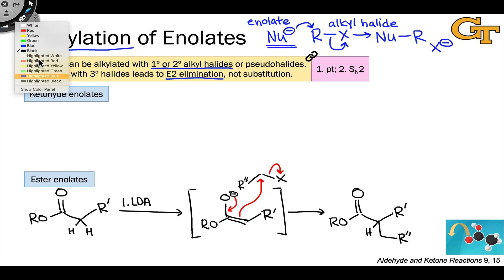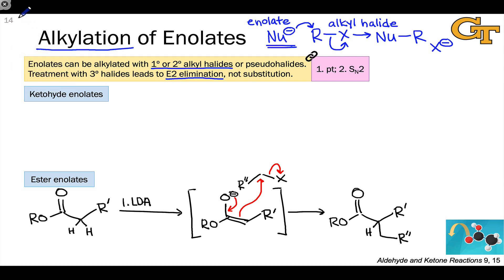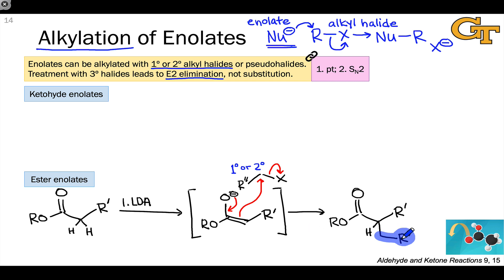This is referred to as alkylation because the electrophilic group installed on the enolate is an alkyl group. If we want to install a second alkyl group on an ester, all we need to do is treat with another equivalent of LDA, then another round of alkyl halide — which can even be different from the first — to install a second alkyl group alpha to the ester.